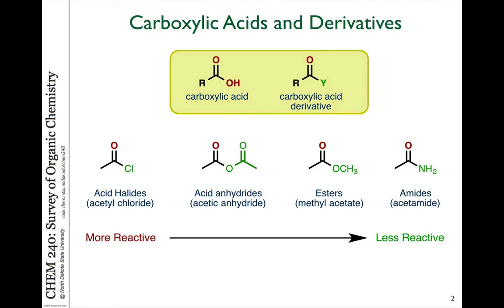A carboxylic acid is an organic molecule where we have carbon attached to a double bond to oxygen and an OH group. There are three bonds to oxygen in total, and because of the resonance available with the electrons from one oxygen to another, that makes the hydrogen on that oxygen quite acidic — much more acidic than water or an alcohol functional group.